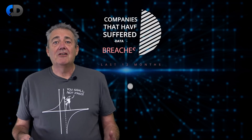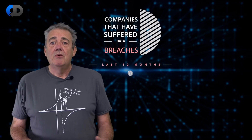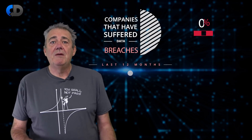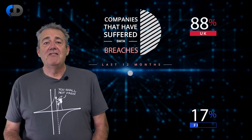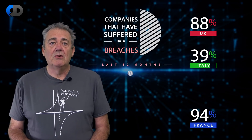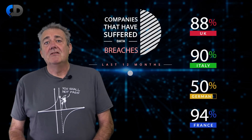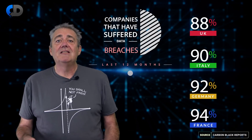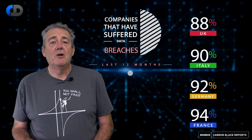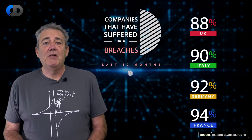Estimates on the scale of data breaches are really quite frightening. Estimates of how likely a company is to suffer a breach range from somewhere between 27.7% to over 90% depending on the source. Some sources say, for example, that around 90% of European companies have suffered a breach in the past 12 months.